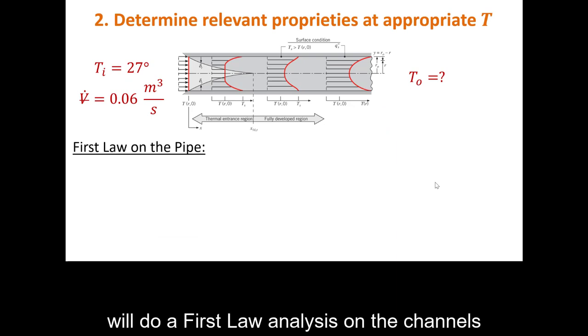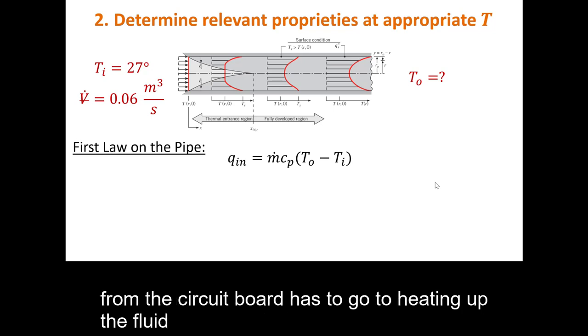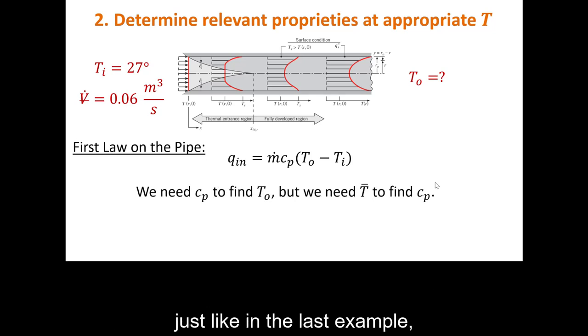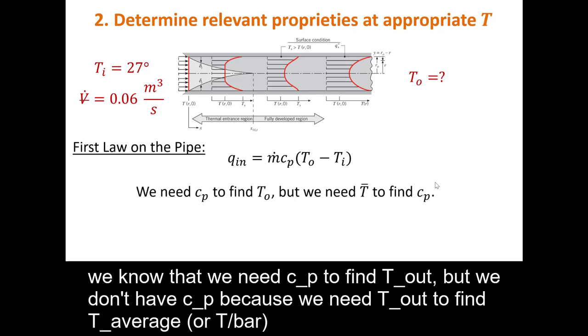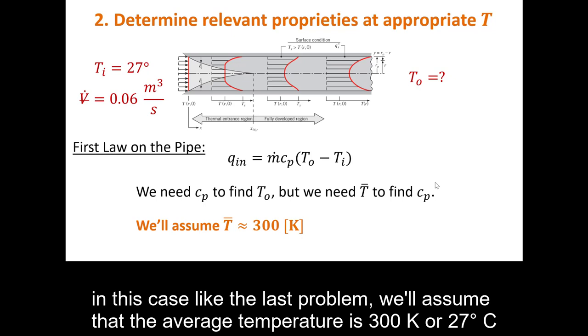We'll do a first law analysis on the channels. We know that all the heat in from the circuit board has to go to heating up the fluid. Just like in the last example, we know that we need CP to find T out, but we don't have CP because we need T out to find T average. So, we'll have to assume some average temperature. In this case, like the last problem, we'll assume that the average temperature is 300 degrees Kelvin, or 27 degrees Celsius.